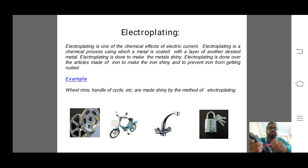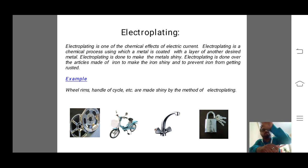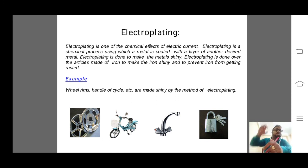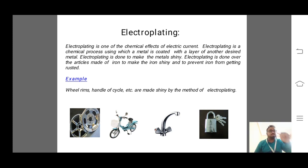For example, to gold-plate a metallic spoon: the spoon is connected to the negative terminal and gold is connected to the positive terminal. When you switch on the battery and pass the current, the gold solution dissociates and the gold from the solution moves to the cathode — the negative terminal — where the metal to be coated (the spoon) is kept. So when current is passed, gold from the solution gets deposited onto the spoon at the cathode.